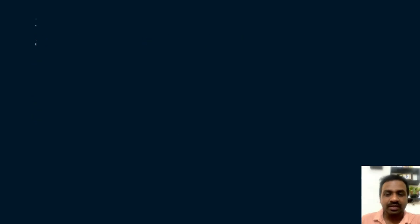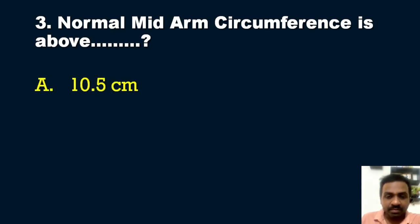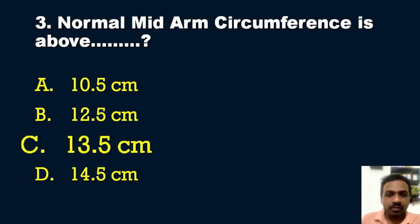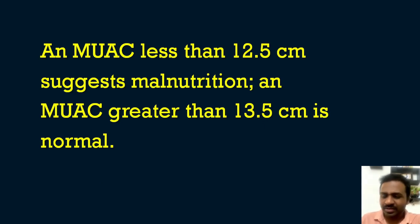The third question is: normal mid upper arm circumference (MUAC) is above which value? Options are: A) 10.5 cm, B) 12.5 cm, C) 13.5 cm, D) 14.5 cm. The answer is option C, 13.5 centimeters. A MUAC less than 12.5 cm suggests malnutrition, while a value greater than 13.5 cm is considered normal.